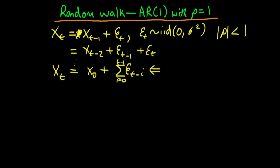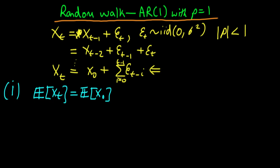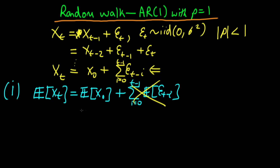Now we're in a position to think about the properties of an AR(1) process with rho equal to 1, which we call a random walk. The first property is the expectation of Xt. We can see that this is equal to the expectation of X0 plus the expectation of the second term, which is the sum from i=0 to t-1 of the expectation of Et-i.